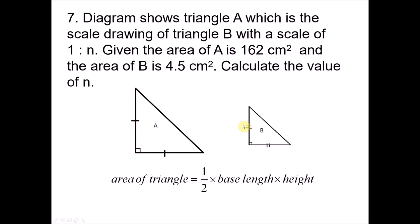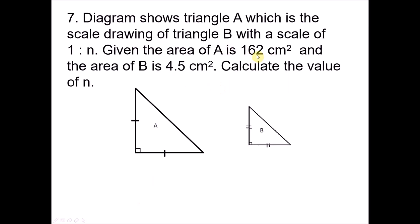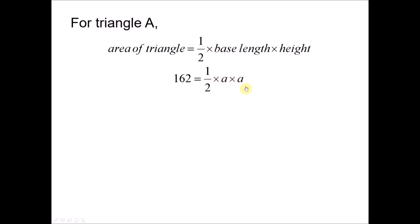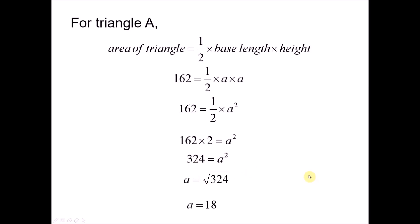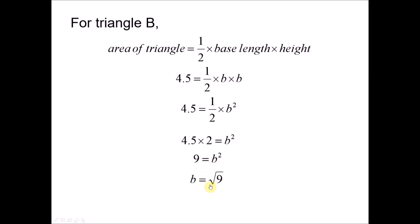For triangle A: area = ½ × a × a = ½a². Given area is 162, so a² = 162 × 2 = 324, and a = √324 = 18. For triangle B: area = ½ × b × b = ½b². Given area is 4.5, so b² = 4.5 × 2 = 9, and b = √9 = 3.